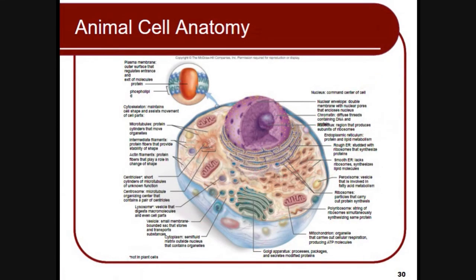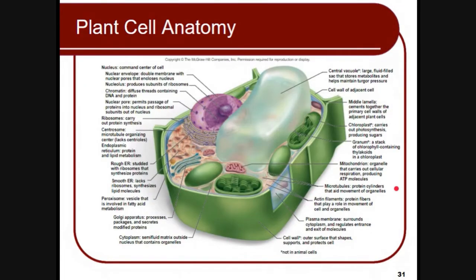Let's take a look at the anatomy of the cell. Several parts include: plasma membrane, cytoskeleton, microtubules, intermediate filaments, centrioles, centrosome, lysosome, vesicles, cytoplasm, nucleus and nuclear envelope, ribosome, endoplasmic reticulum — both rough and smooth ER — peroxisome, polyribosome, mitochondrion, and Golgi apparatus. For plant cells, some unique parts include the central vacuole, cell wall, chloroplasts, grana, and lamella.